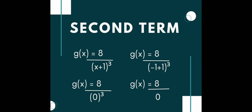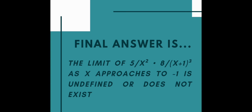So what does this mean for our original function? Since the limit of one of the terms is undefined, the limit of the entire product is also undefined. The limit of the function 5 over x squared times 8 over x plus 1 cubed as x approaches negative 1 is undefined. This is because the denominator x plus 1 cubed becomes 0 when x equals negative 1. Limits involving division by 0 are typically either undefined or approach infinity, depending on the behavior of the numerator. In this case, since the numerator does not approach 0, the limit is undefined.